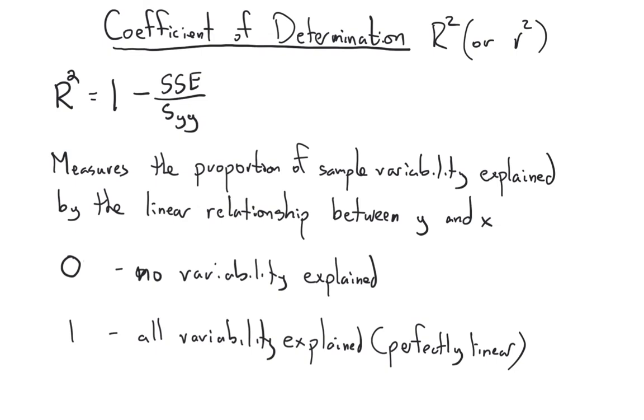So more formally, we have this coefficient of determination. It's usually called R squared with a capital R, although you might see in some books little r squared. The reason that we write R squared is to remind ourselves that it has to do with squared distances. Because we want to measure the proportion of sample variability explained by the linear relationship between y and x, we want the higher number to mean lots explained by the regression line, we want 1 to be everything's explained and 0 to be nothing's explained, so we just take that quantity that we calculated in the previous slides and we subtract it from 1.